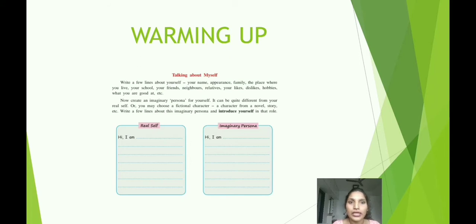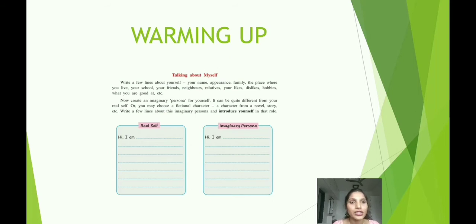So children, in the first column, you will have to introduce your own self with the help of the points given above — your name, your appearance, that means the way you look, your family background, the place where you live, your school, your friends, etc. In the next column, you will have to introduce yourself as an imaginary character — either from a novel, a story, or a film. You have to imagine that you are that character and then introduce yourself.